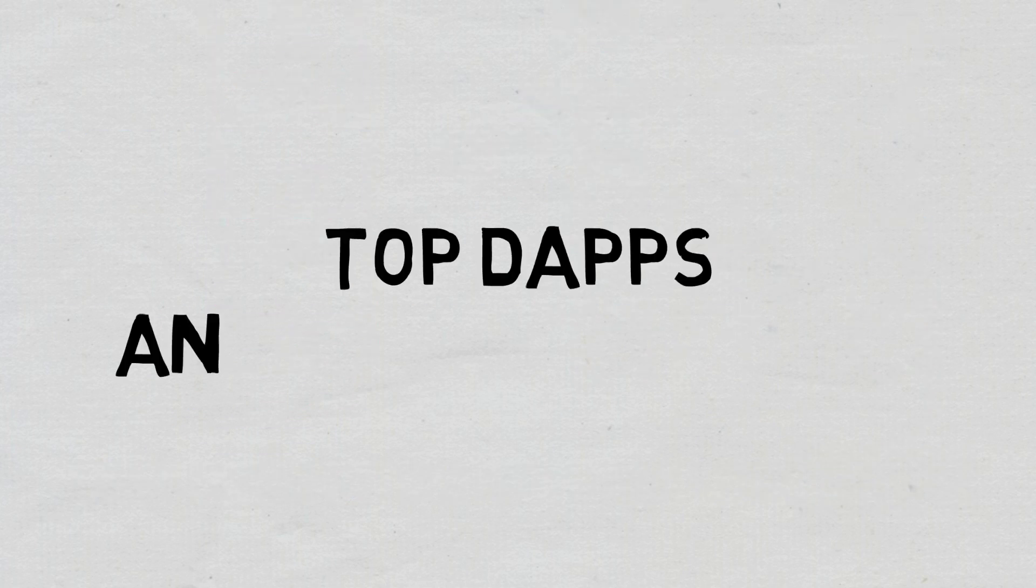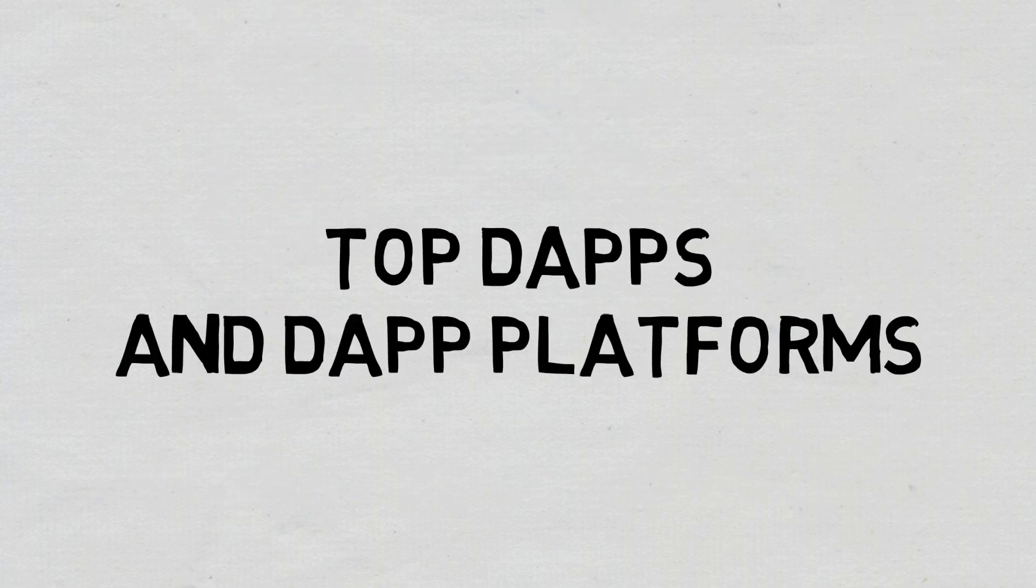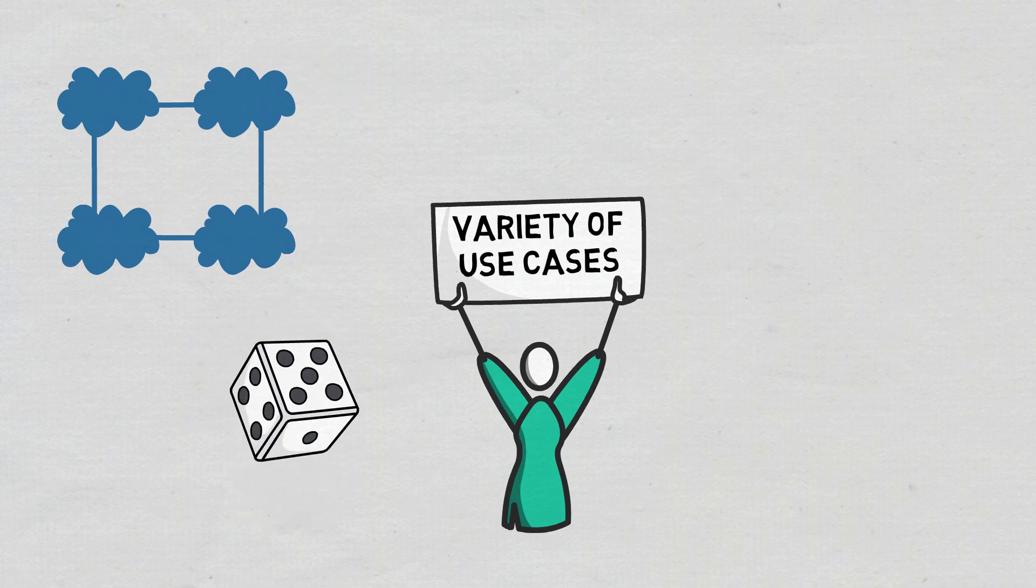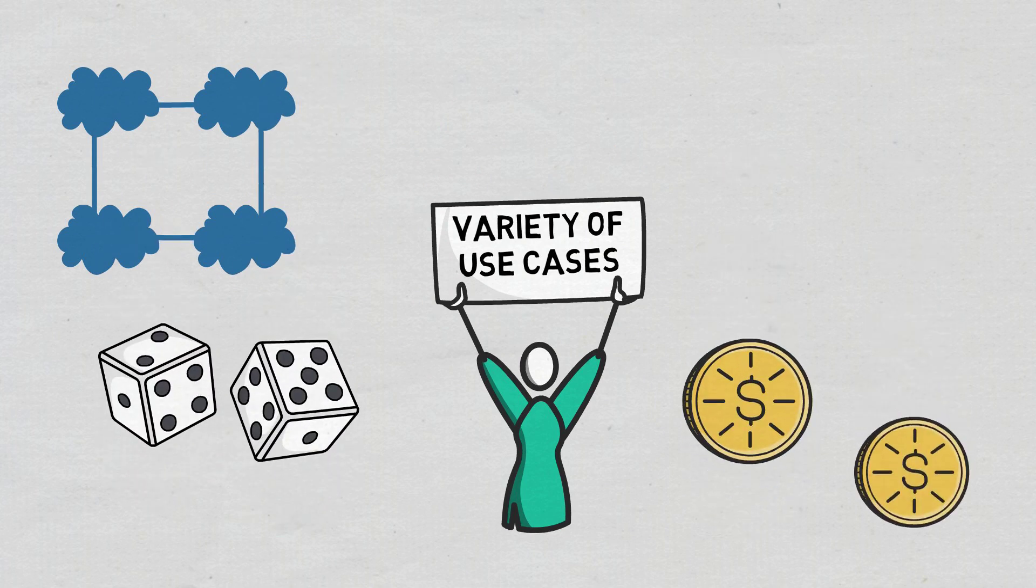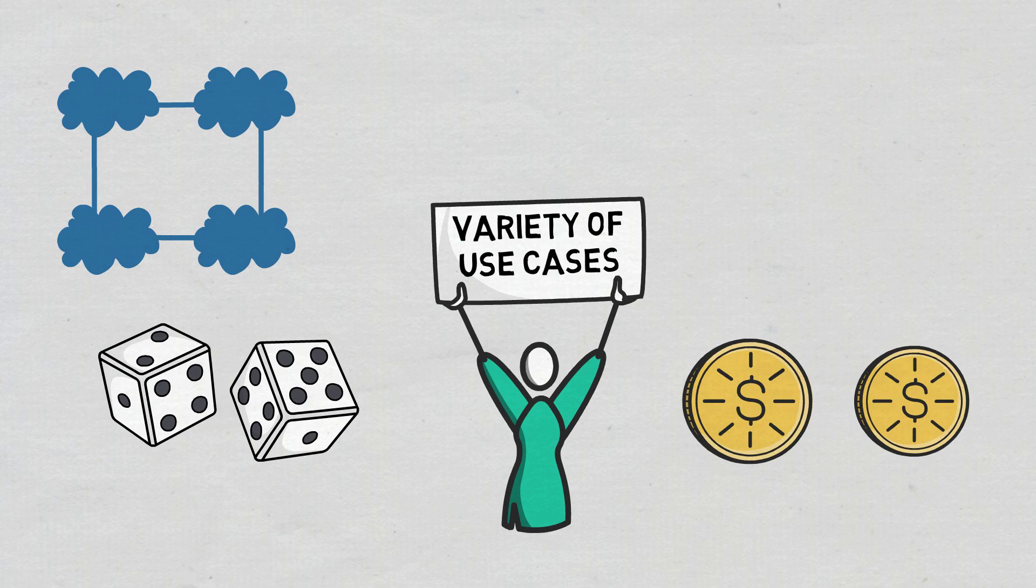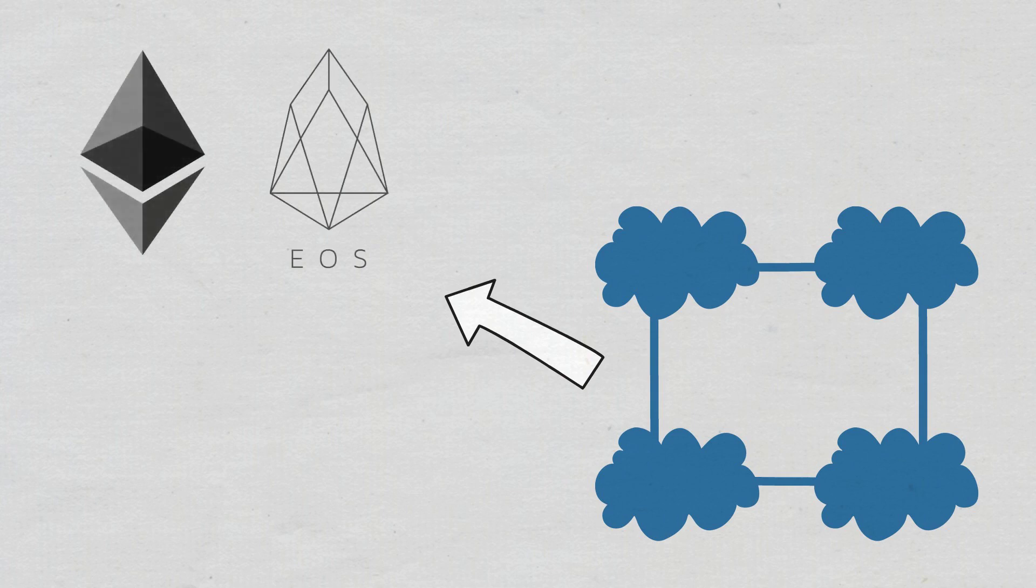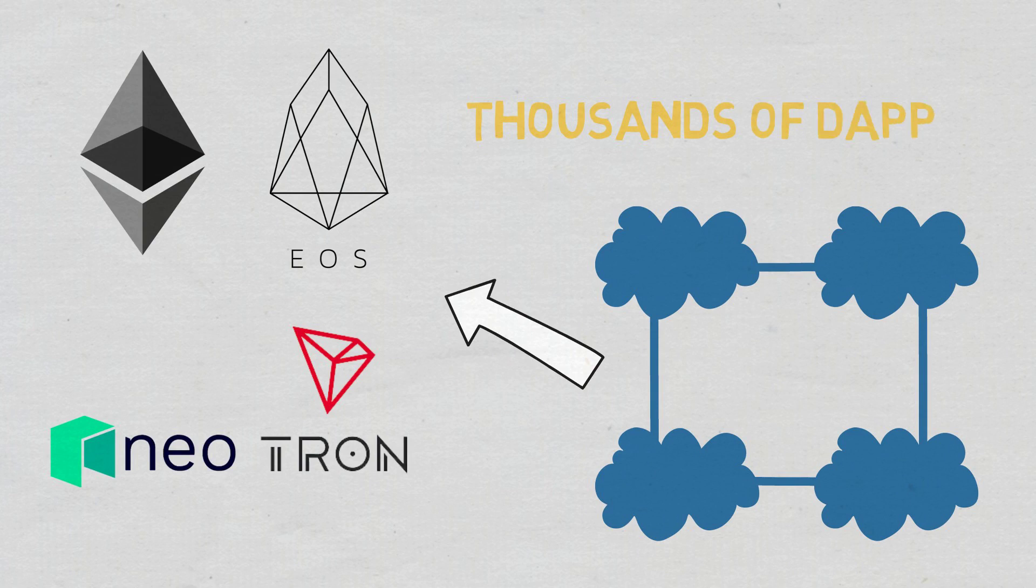Top dApps And dApp platforms. Given their advantages, dApps have a variety of use cases and can be created for totally different purposes and services, ranging from playing games to exchanging tokens. The most popular blockchain platforms for building dApps today are Ethereum, EOS, NEO, and Tron. There are currently thousands of dApps out there, offering a variety of functions.